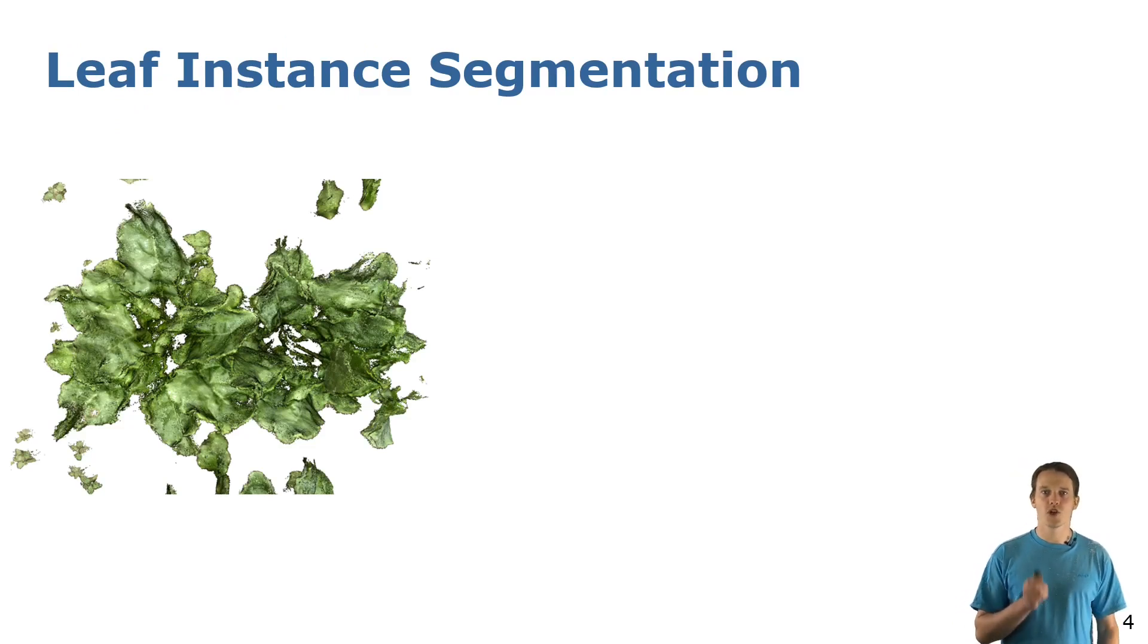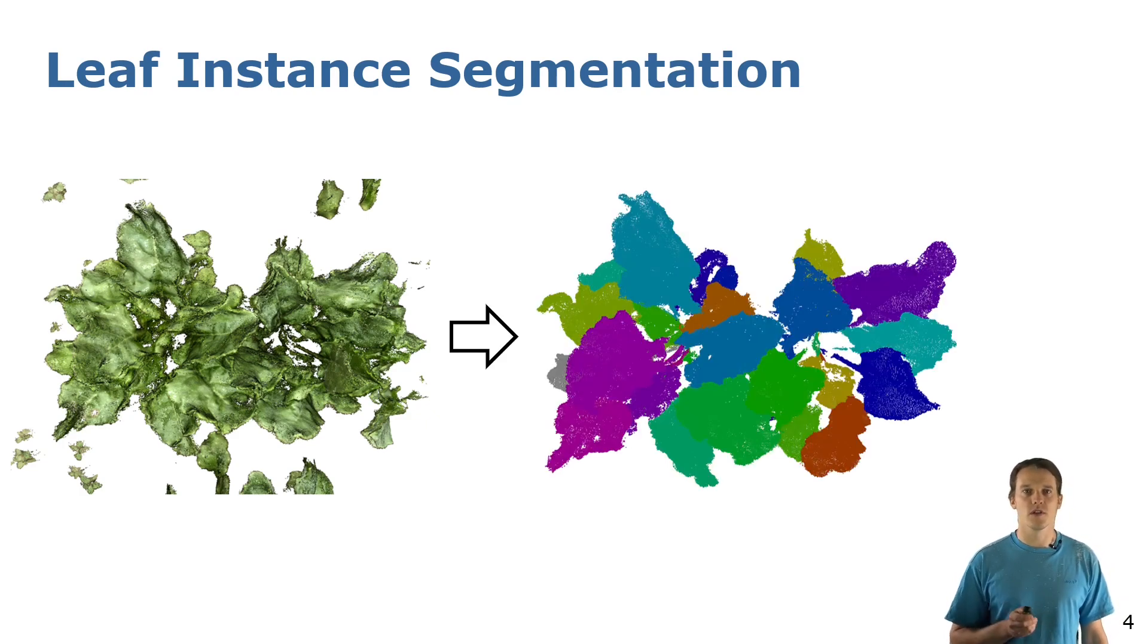Given an input point cloud like the one shown here on the left, we want to know which points are part of which leaf, which is color coded in the point cloud on the right.